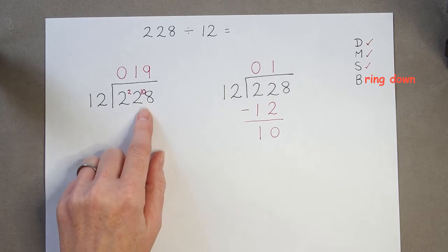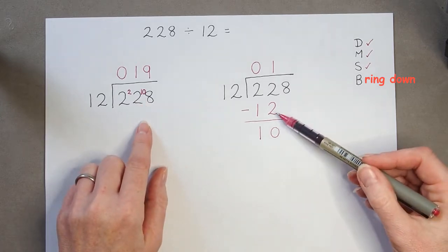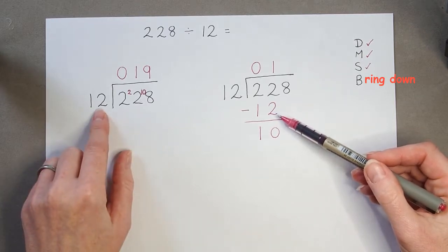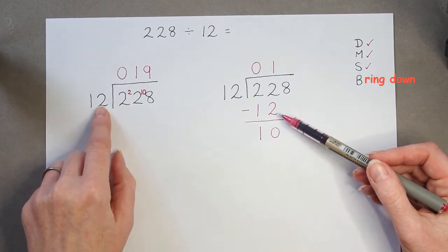Only this time, instead of working out the difference in our head, we've actually written down the multiple that we got to. 1 times 12 is 12. We've written it down so that we can do that subtraction on paper.